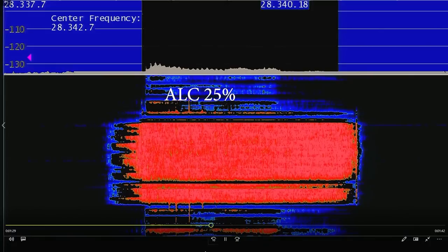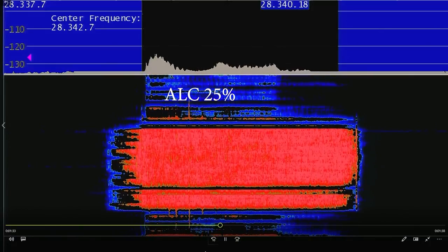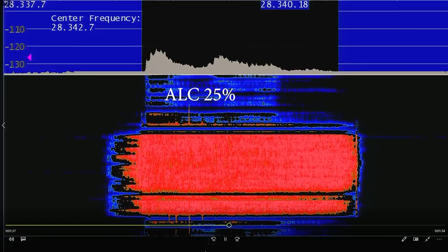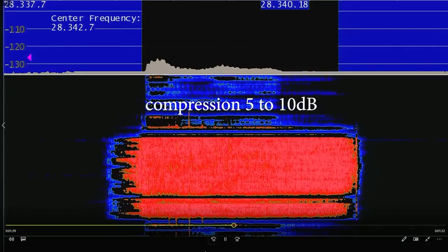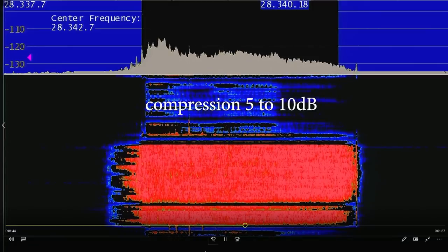So notice the bandwidth now. 1, 2, W6LG. 1, 2, 3, 4, 5. And again, I have one transceiver next to the other transceiver. All right, I'm going to turn the compression back up.